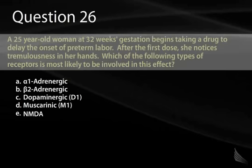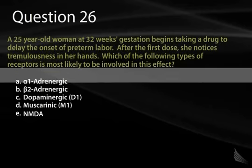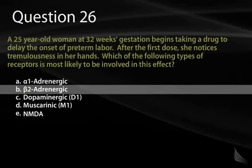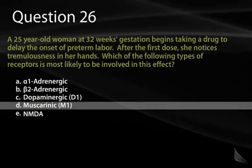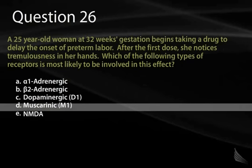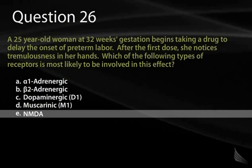Question 26. A 25-year-old woman at 32 weeks gestation begins taking a drug to delay the onset of preterm labor. After the first dose, she notices tremulousness in her hands. Which of the following types of receptors is most likely involved? A, alpha-1 adrenergic. B, beta-2 adrenergic. C, dopaminergic D1. D, muscarinic M1. Or E, NMDA.